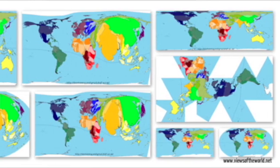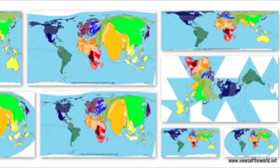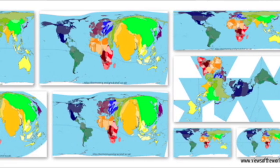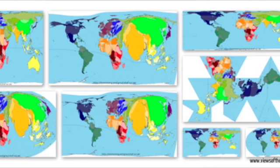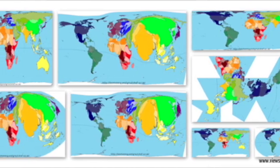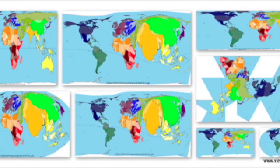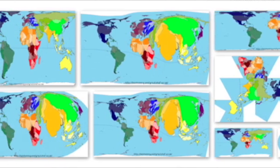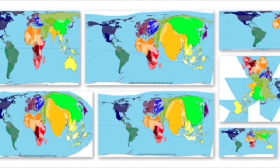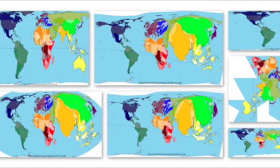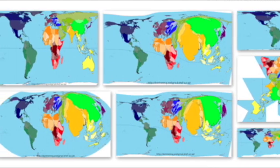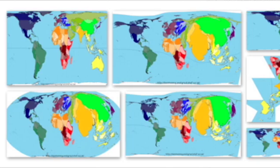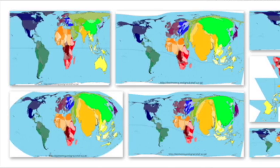But how is a round Earth shown on a flat map? To do this, geographers use something called map projection. This is when some parts of the Earth are distorted in order to represent other parts as accurately as possible. Some projections show the correct size of certain areas in relation to one another; others break apart the ocean. Map makers choose a projection based on the purpose of the map.